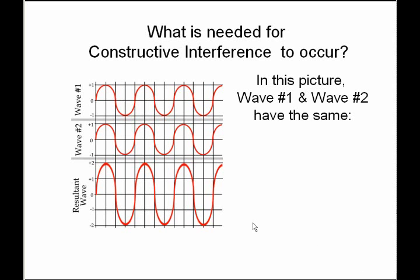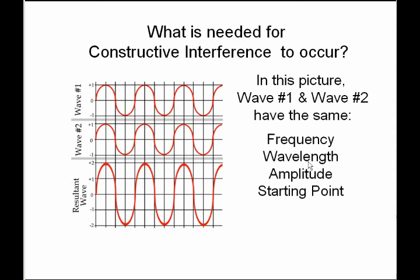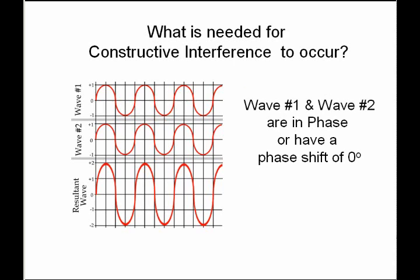Now let's look at constructive interference. We're going to add wave 1 plus wave 2 to get a resultant wave. In this picture, wave 1 and wave 2 have the same frequency, the same wavelength, the same amplitude, and most importantly the same starting point — they are both starting at the beginning of the wave series. That starting point is called the phase, and we say that those two waves are in phase with each other, or have a phase shift of zero degrees.